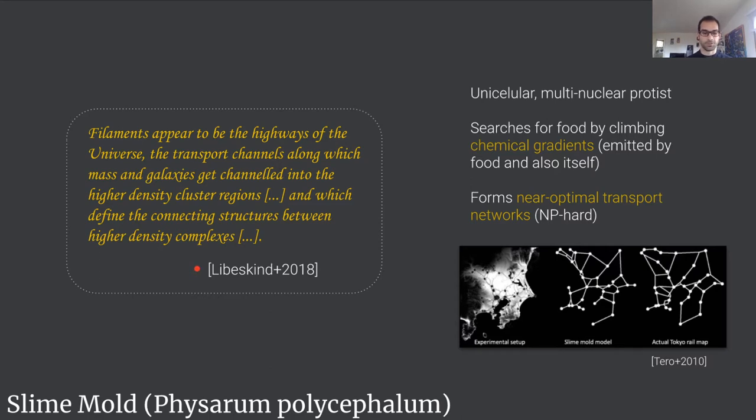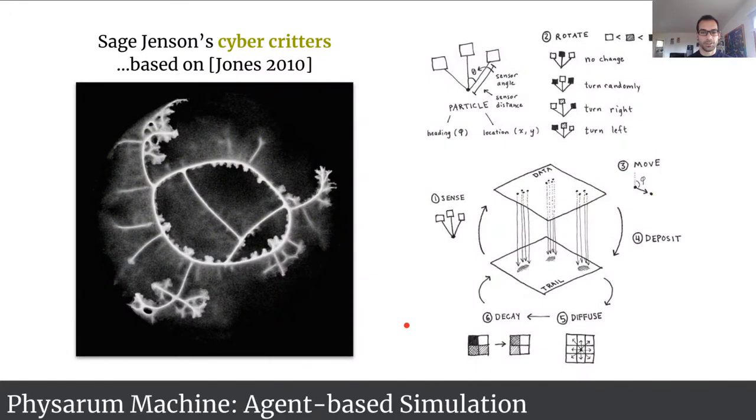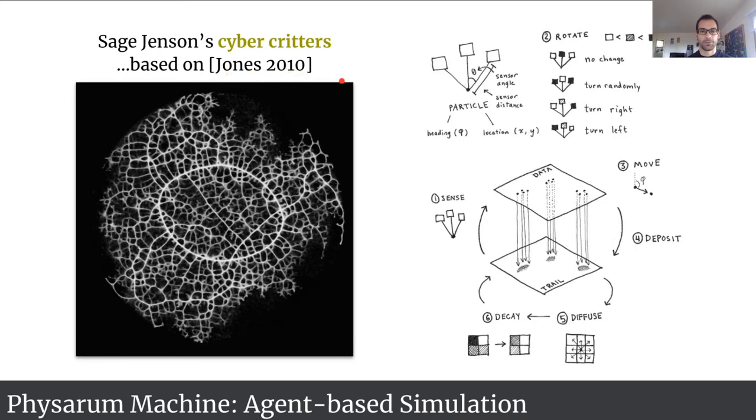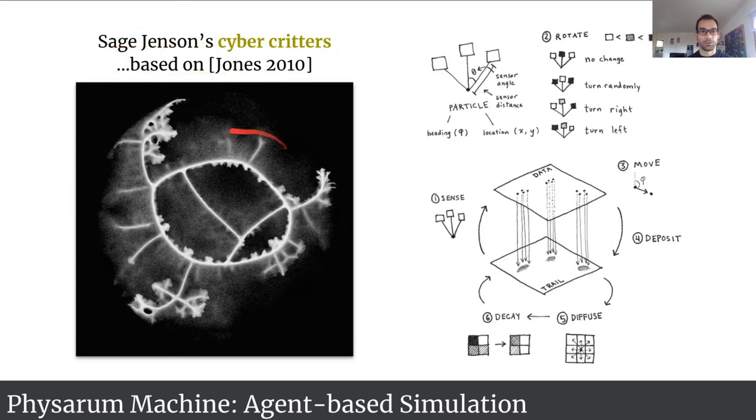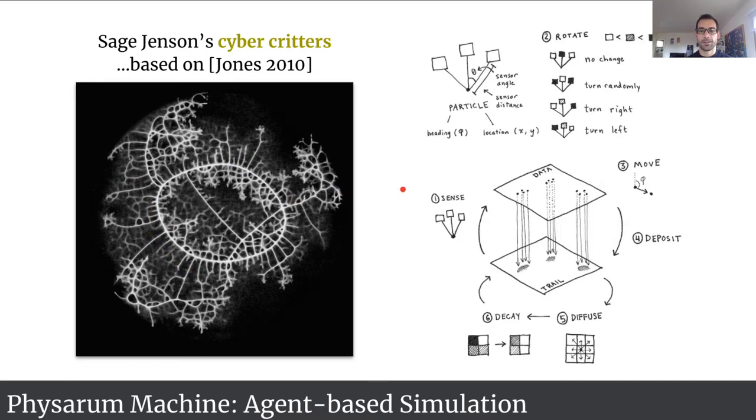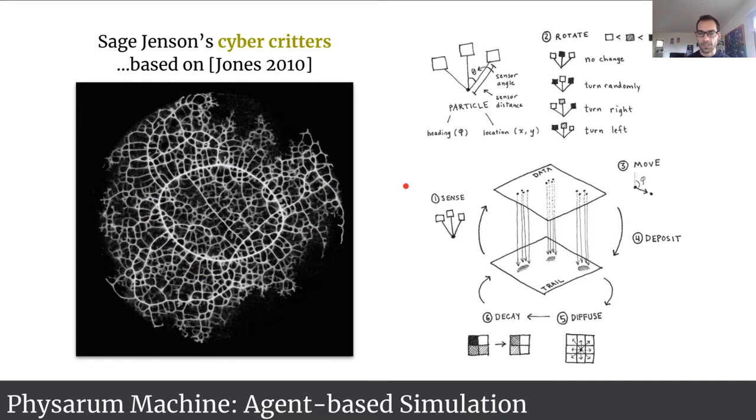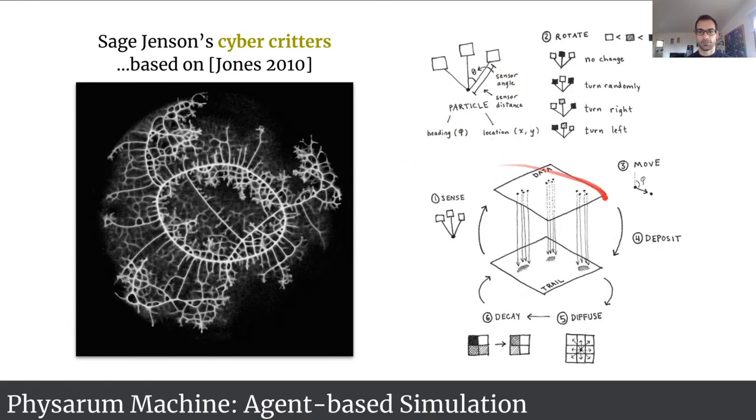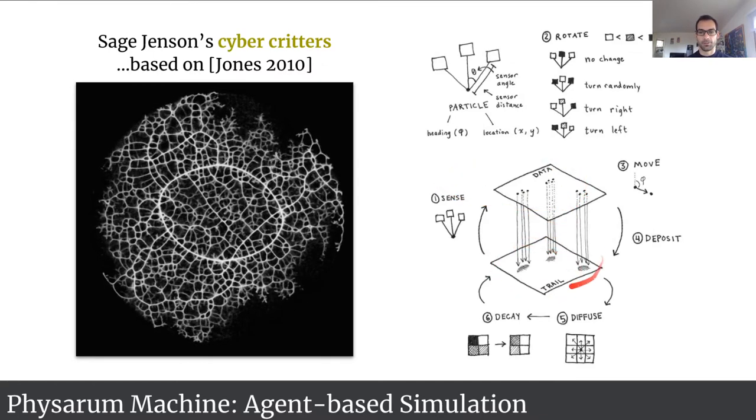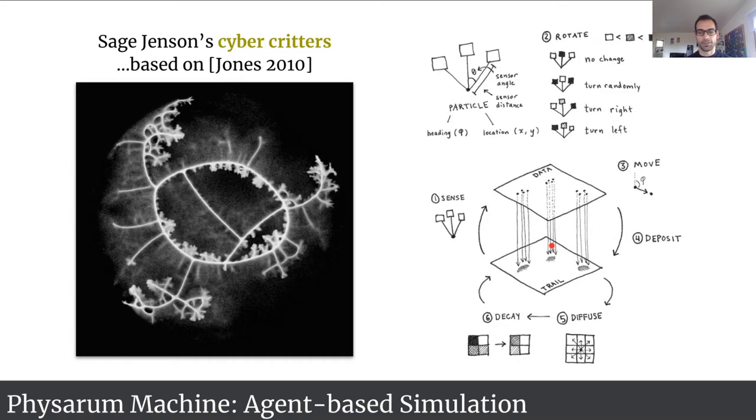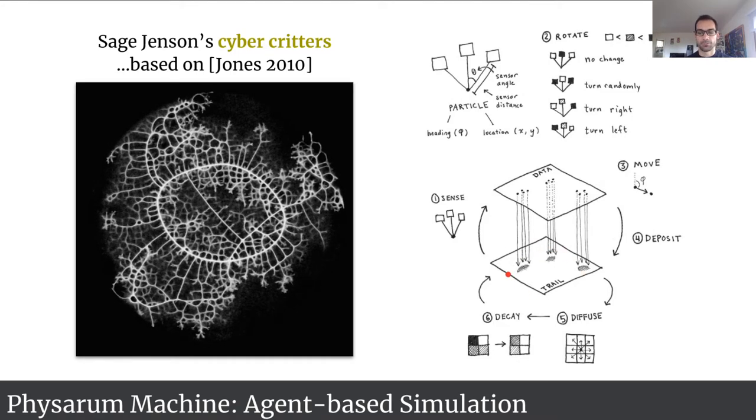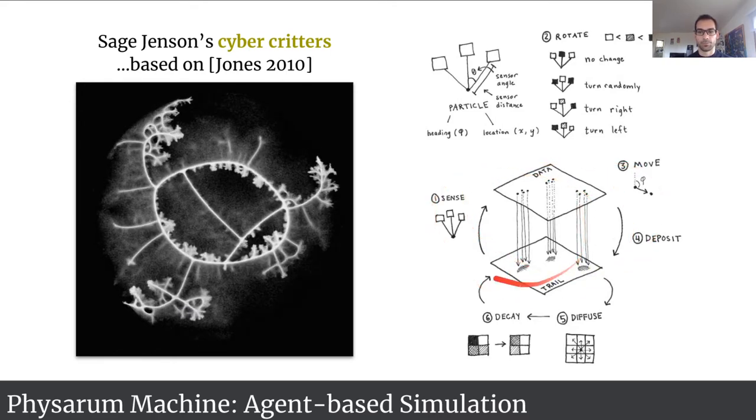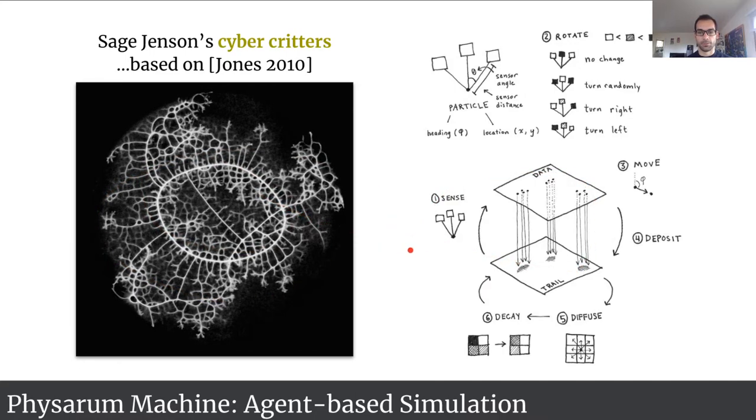Now using the actual organism would be extremely impractical, so what we do instead is rely on simulation. We use this hybrid method first proposed by Jones in 2010 and since used for instance by Sage Jensen to create beautiful animation art. The model itself is quite simple. It uses a swarm of particle-like agents, in our case millions of these agents that free flow in the environment, and then a second modality that represents the density of these agents and density of the attractant emitted by the galaxies.